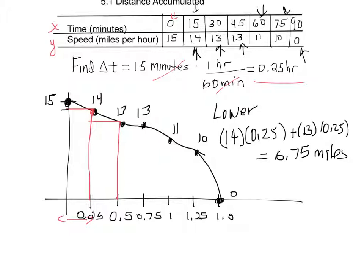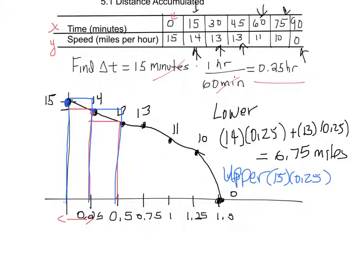For an upper estimate, I start on the left side, go up to the higher point, draw the rectangle across and straight down to the next point. As you can see, this is an overestimate because some of the rectangle is above the graph. For the upper estimate over the first half hour: height 15 times width 0.25, plus height 14 times 0.25, and you should get 7.25 miles.